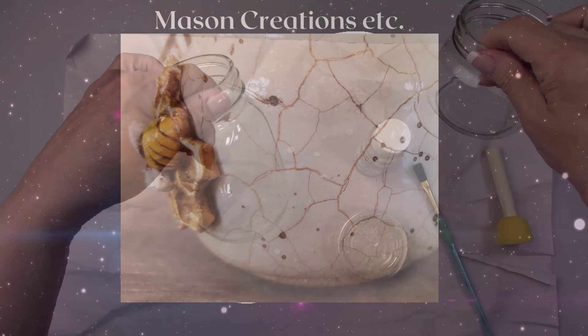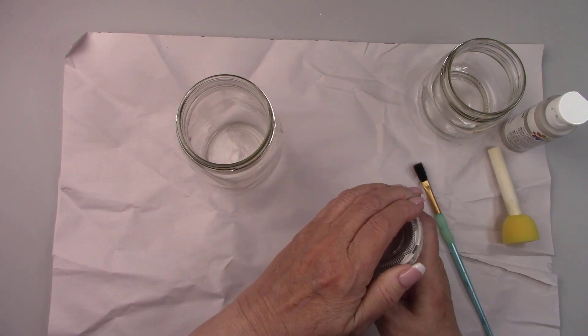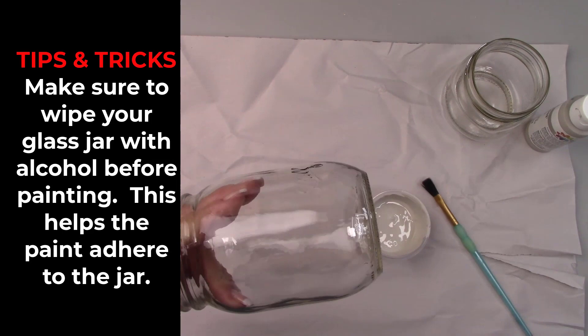I'm painting a base coat of a very neutral beige. I lightened up a portion of the paint for my base coat. I intend to use the larger jar as a soap pump, so I'm making sure not to get paint on the threads of the jar.